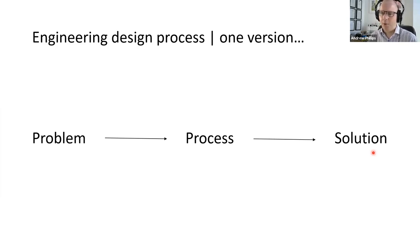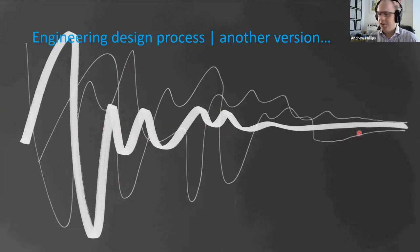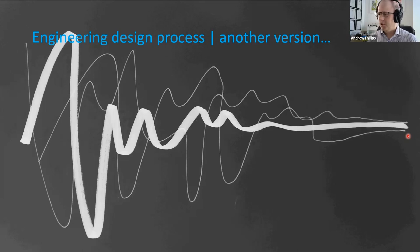At the other end of the scale, I have seen a diagram presented as the engineering design process that is very chaotic at the beginning, and somehow through a sort of engineering magic, we end up arriving at a converged solution at the end. What we want to do is provide students with something between these two extremes.